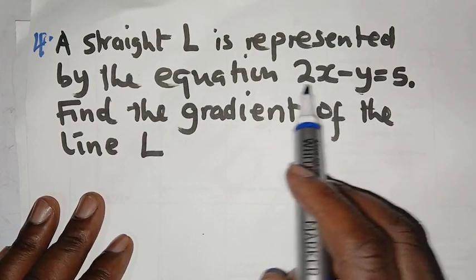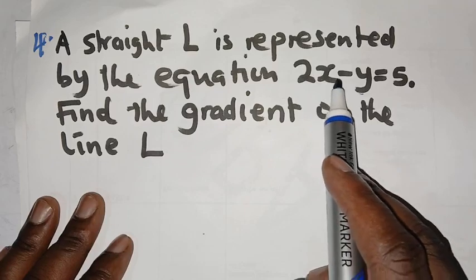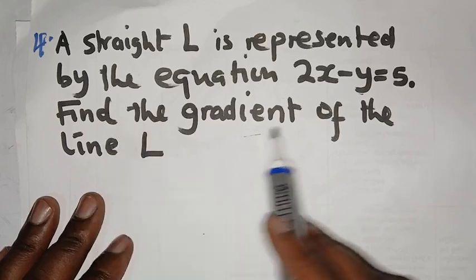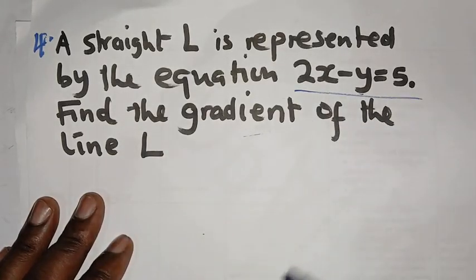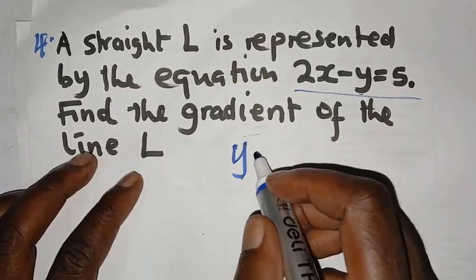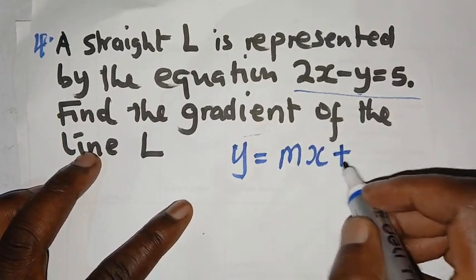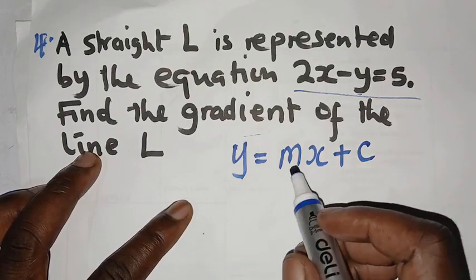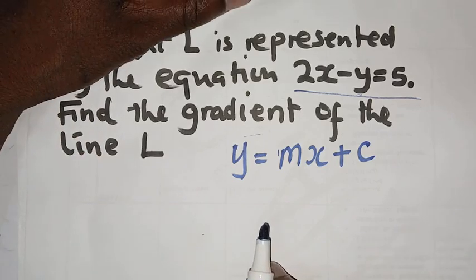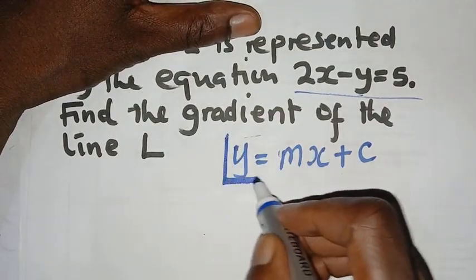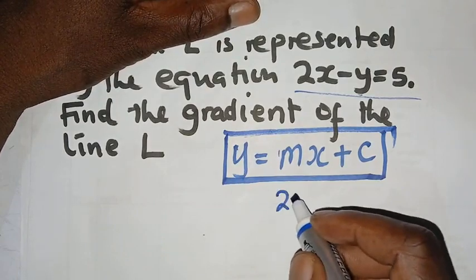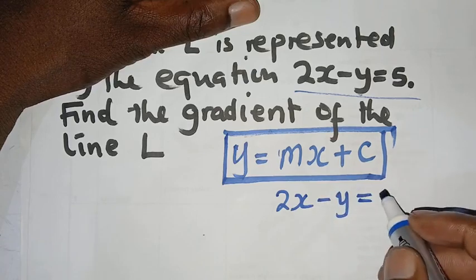A straight line L is represented by this equation. We are asked to find the gradient of the line — in other words, find the gradient of this equation. To find the gradient, we need to write the equation in the form y = mx + c. The coefficient m is what will give us our gradient. So we start with: 2x minus y equals 5.